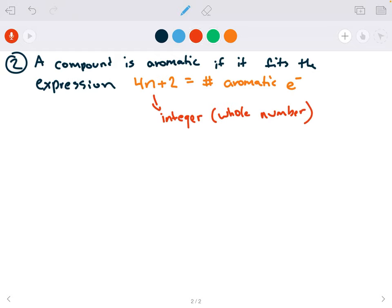So for benzene, like we just had, if it has six electrons that are part of the aromatic component, so I would say 4n plus 2 equals 6. So 4n equals 4, n is equal to 1. So that means benzene is aromatic.